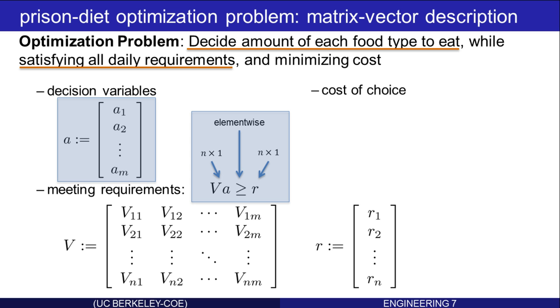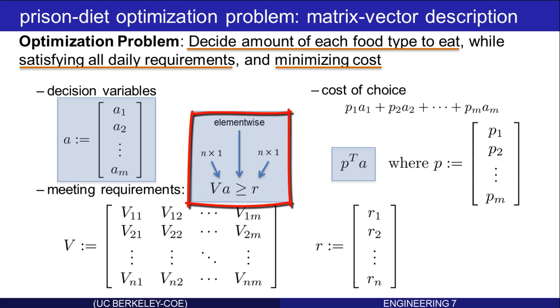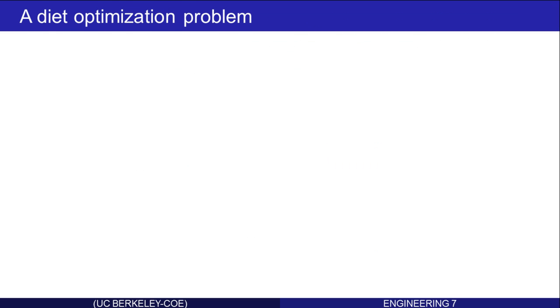Cost of the choice of the decision variables? The unit prices of each food times the amount eaten summed up over all the foods. This can be written as an inner product. Nothing more than P transpose A, where P is the known vector of prices. So there is minimizing cost. We'd like to make that small. So to summarize, we need to choose A such that N linear inequalities are satisfied, all the while minimizing a linear function of A. Let me summarize this on the next slide.